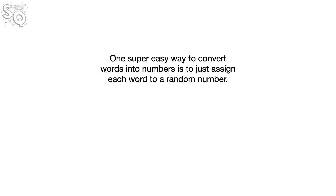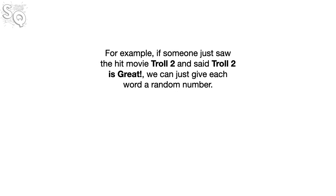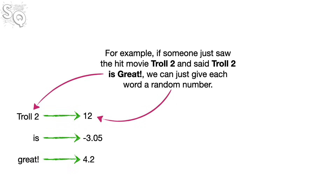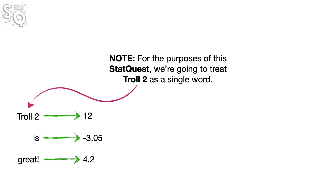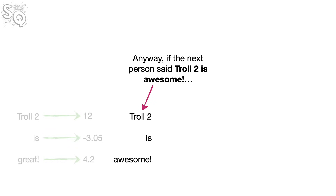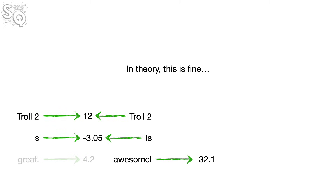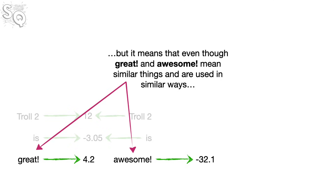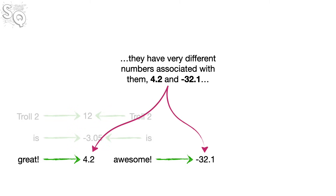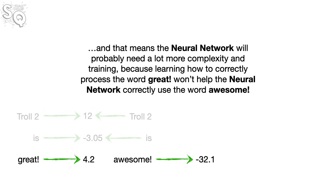One super easy way to convert words into numbers is to just assign each word a random number. For example, if someone said 'Troll 2 is great', we can give each word a random number. But even though 'great' and 'awesome' mean similar things and are used in similar ways, they'd have very different numbers — like 4.2 and negative 32.1 — meaning the neural network will need a lot more complexity and training.